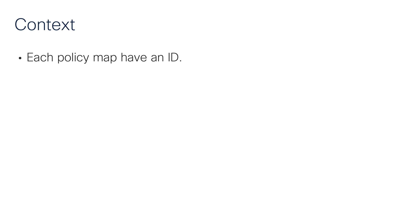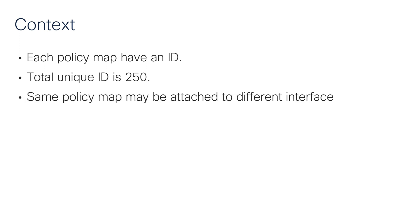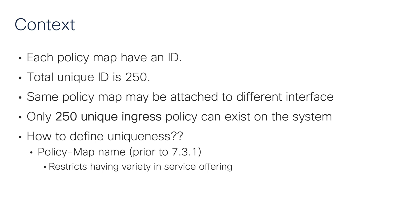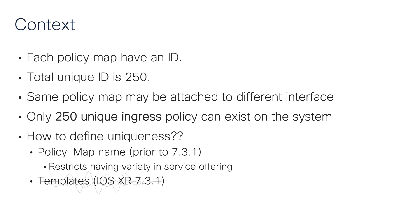The next feature is an enhancement of unique policy map scale with templates. Each policy map on the system has an ID, and the total unique IDs available is 250. The same policy map attached to multiple interfaces consumes only one ID, so we can have only 250 unique ingress policies. Prior to 7.3.1, uniqueness was defined by the policy map name, meaning only 250 unique policy map names were allowed. With 7.3.1, we use a template-based definition, so we can have more than 250 policy map names with different policing parameters — say 100 Mbps or 1000 Mbps — and they consume only one unique ID.